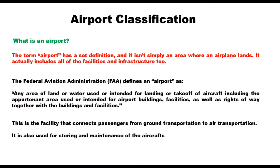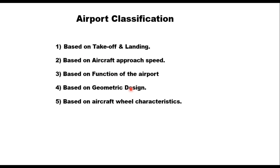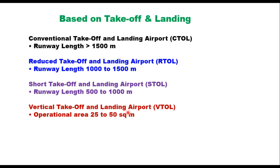An airport is the facility that connects passengers from ground transportation to air transportation. It is also used for storing and maintenance of aircraft. FAA has classified airports based on several criteria: based on takeoff and landing, based on aircraft approach speed, based on function of the airport, based on geometry design, and based on aircraft wheel characteristics.